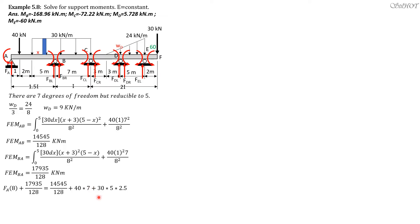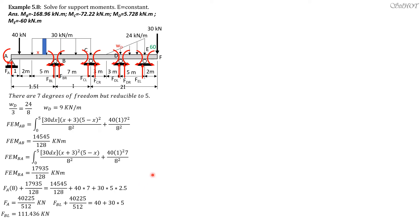From summation of moments at B equals zero: FA times 8 plus 17935 over 128 equals 14545 over 128 plus 40 times 7 plus 30 times 5 times 2.5, giving FA equals 40225 over 512. From summation of vertical forces equals zero, FDL equals 111.436 kilonewtons.